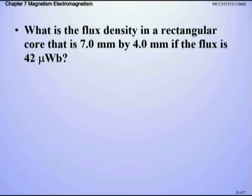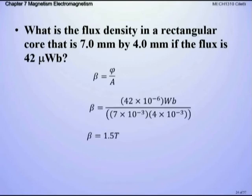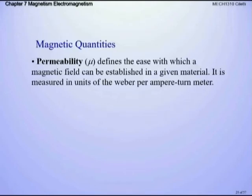Just to review: what is the flux density for a 7 mm × 4 mm rectangular core if the flux is 42 microwebers? Same equation — β = φ / A — but note that we must convert millimeters to meters first: move the decimal three places to the left, or use 7 × 10⁻³ and 4 × 10⁻³. Let's now talk about permeability.